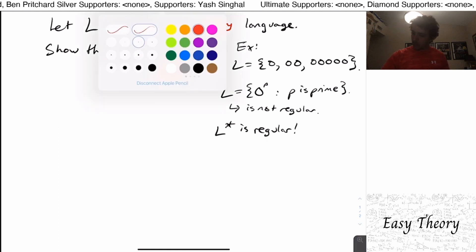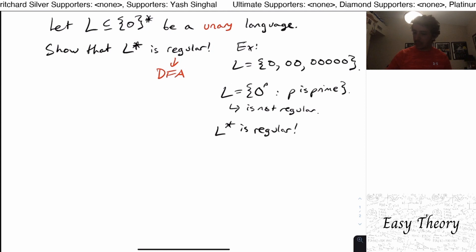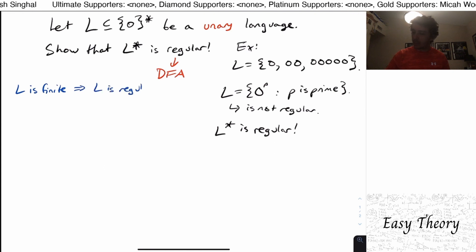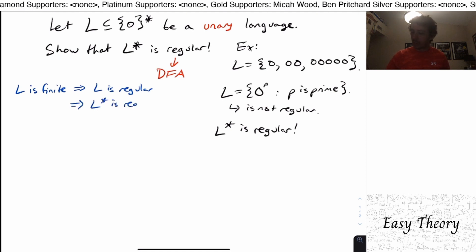One thing that we should start off is if L is finite. So the language L is either finite or infinite. One of those two occurs. If it's finite, that implies that L is regular already, because every finite language is regular. And because regular languages are closed under star, this implies that L star is regular also.